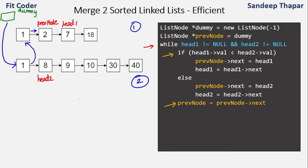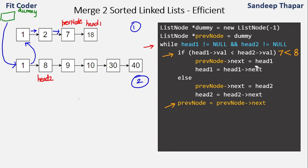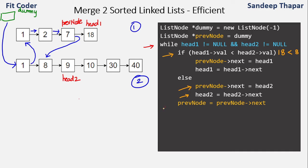Head1 is at 7 and head2 is at 8, so this is true again. We make previous node's next equal to head1, creating the blue link, move head1 to 18, and advance previous node to 7. Now head1 is at 18 and head2 is at 8, so the condition is false. We make previous node's next equal to head2, joining 7 with 8, then move head2 to 9 and advance previous node to 8.